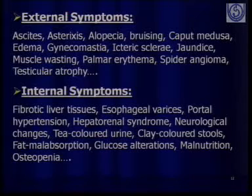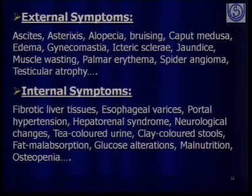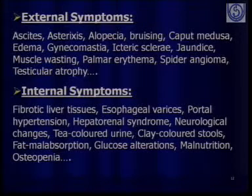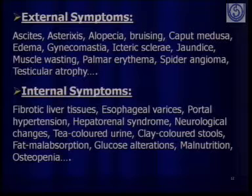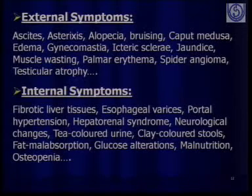Internal symptoms include fibrotic liver tissues indicating non-functional or less efficient liver cells, esophageal varices, portal hypertension, hepatorenal syndrome associated with abnormal liver circulation, neurological changes, tea-colored urine, clay-colored stools, massive fat malabsorption or steatorrhea, glucose alterations, malnutrition, and osteopenia. These symptoms are basically neurological, associated with the GI tract, and associated with malnutrition.